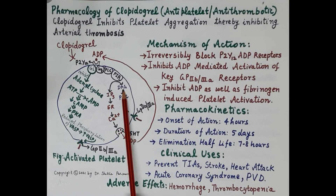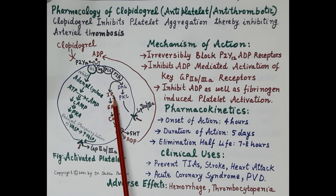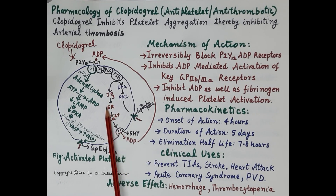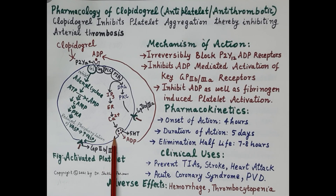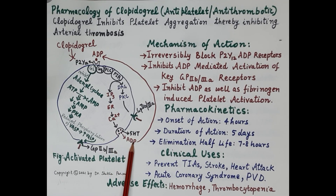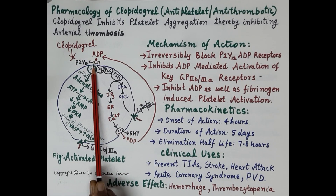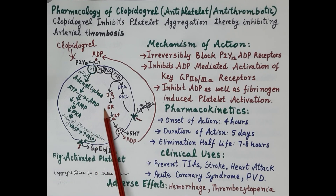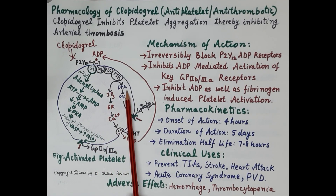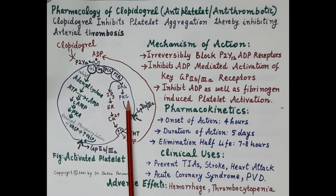DAG and IP3 are very important secondary messengers. IP3 stimulates release of calcium from the smooth endoplasmic reticulum. This calcium causes degranulation — rupture of dense granules present in the platelets — which causes further release of ADP and 5-HT. This ADP further stimulates P2Y12 receptors.